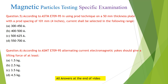Question 6: According to ASTM E709-95, alternating current electromagnetic yokes should give a lifting force of at least: (A) 1.5 kg; (B) 2.5 kg; (C) 3.5 kg; (D) 4.5 kg.